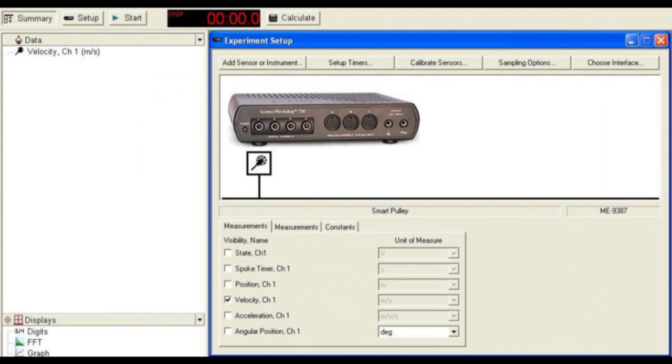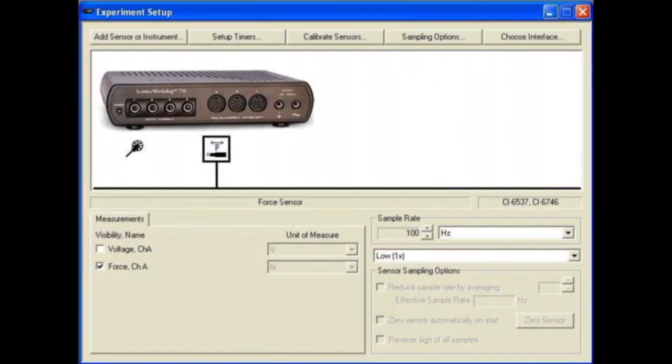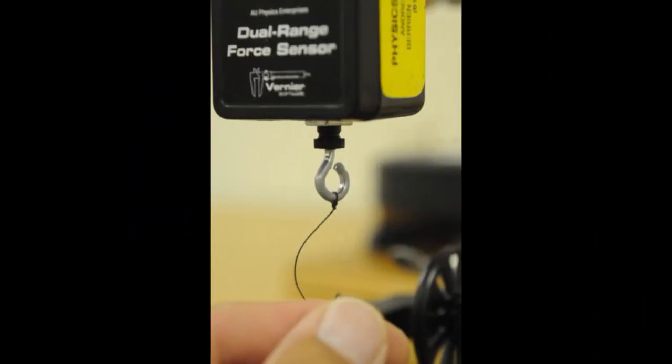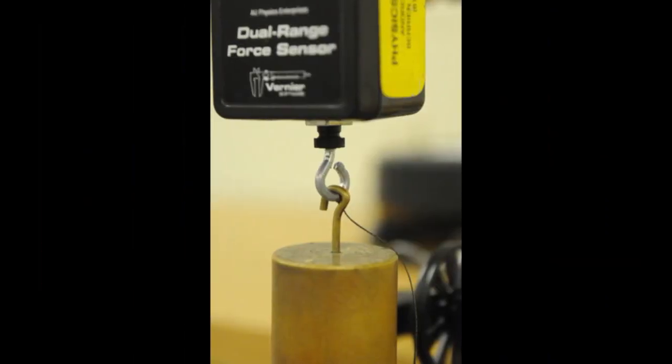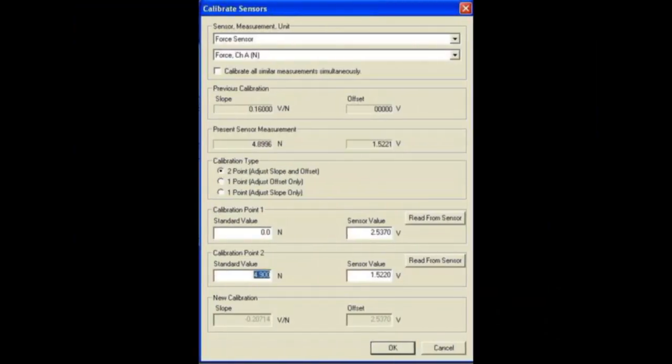Open Data Studio and indicate that a smart pulley is to be used. Also indicate that a force sensor will collect data at a rate of at least 100 Hz. Calibrate the force sensor by removing tension from the string, specifying zero force, and taking a reading. Then hang 500 grams, indicate 4.9 Newtons of force, and take the second reading. It's worth taking a couple of moments to hang and remove the weight to double check the calibration.